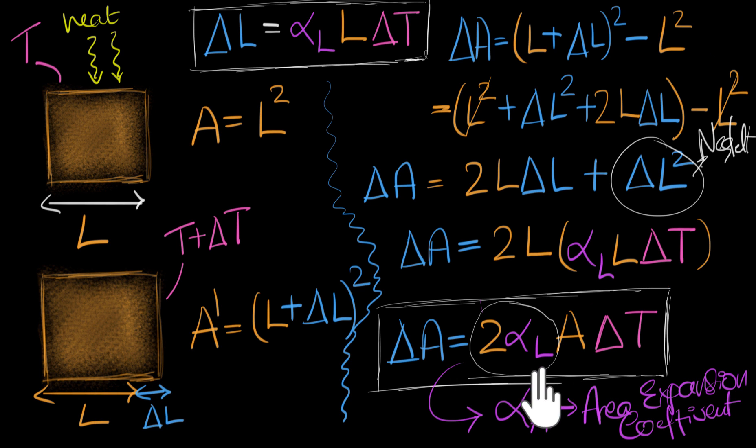And one last thing, which you can check for yourself, is that alpha A should have exactly the same units as alpha L, because it's just 2 times alpha L, right? So 2 has no units, so it has the same units. Kelvin inverse would be the units of alpha A.